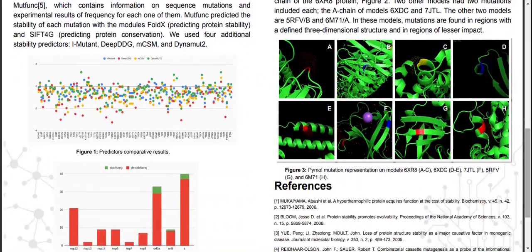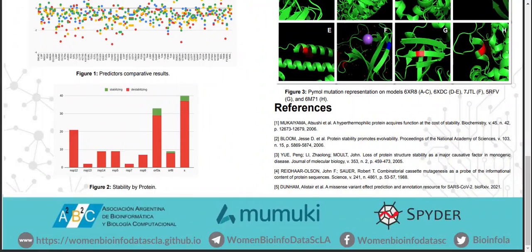Here in Figure 1, we can see the prediction of protein stability in each of these predictors. Some of these predictors tend to be more conservative, meaning that it's harder for them to predict instability in protein structure, while other predictors tend to predict instability with more ease. DIPDDG tends to predict protein instability with more ease, while iMUTANT and MCSM are more conservative.